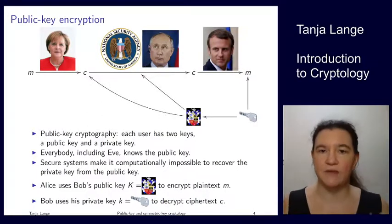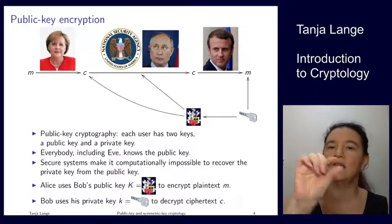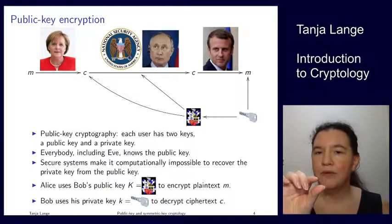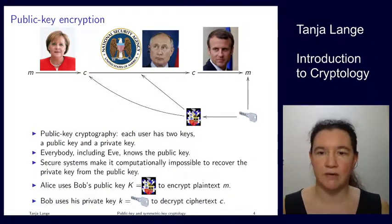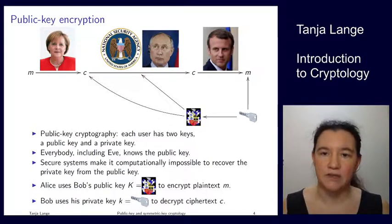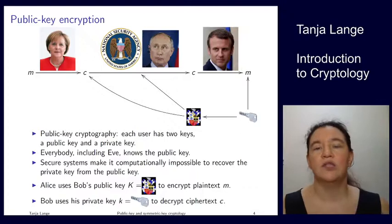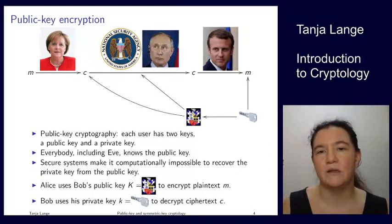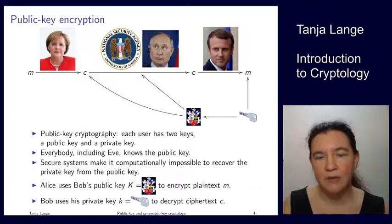Once Bob receives this message — Alice has been taking the plaintext, moving to the ciphertext, and sending the ciphertext over — Bob gets the ciphertext and Bob is the only person who knows his private key. So Bob can unlock the message from the ciphertext and get M back. This looks similar to the symmetric key cryptography setting, except only Bob knows the private key — it is not known to Alice, who only knows the public key.